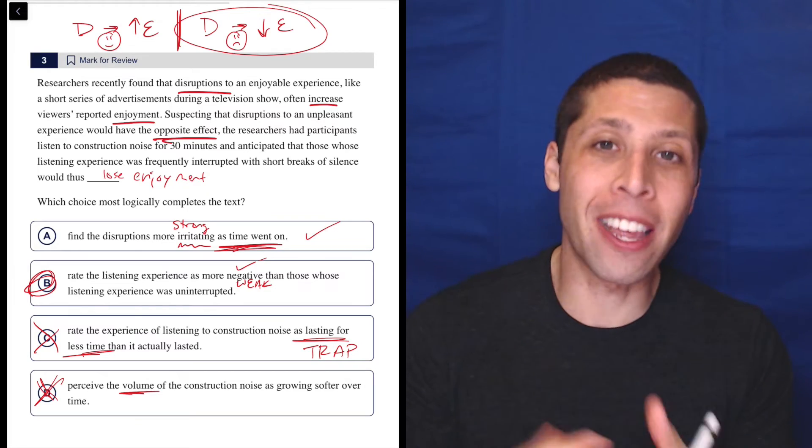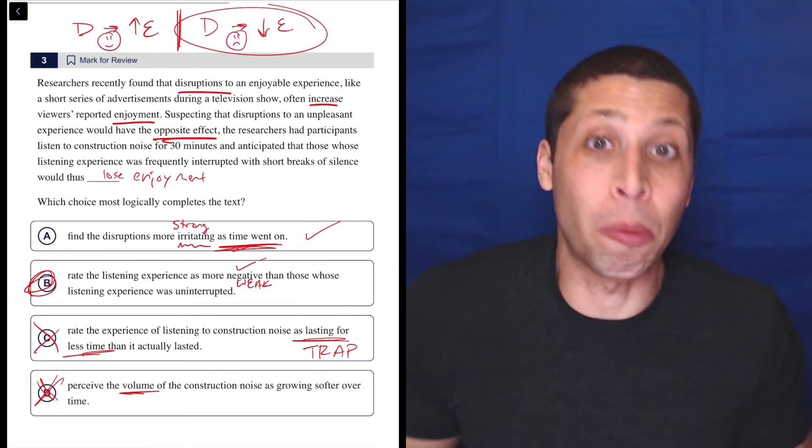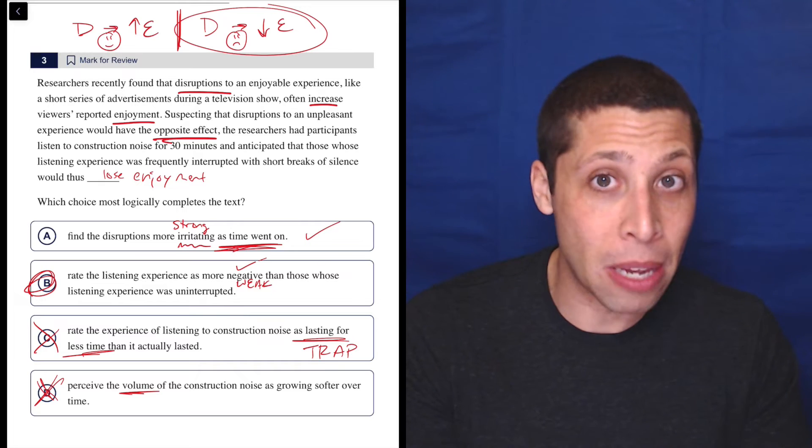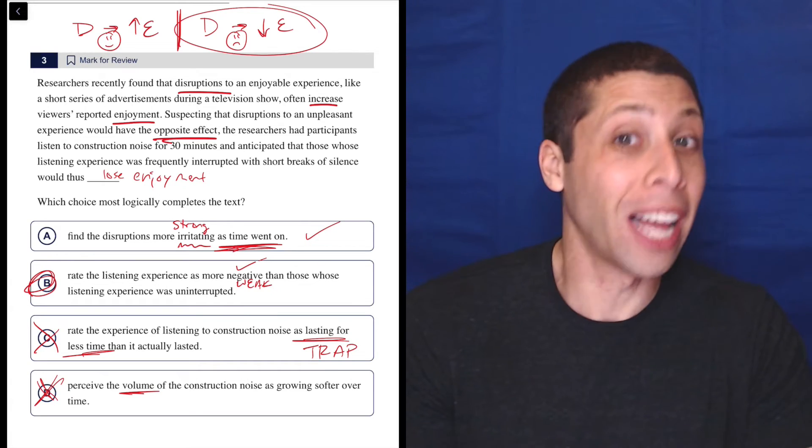vague answers are often very good because they don't stand out. And the SAT doesn't want us to have the answer be obvious. They want us to work for it. So something like B doesn't bother me being more weak, more kind of vague. It's actually what makes it more likely to be right in my eyes.